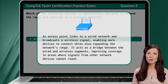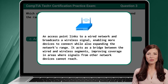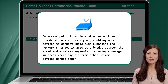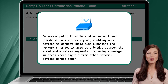An access point links to a wired network and broadcasts a wireless signal, enabling more devices to connect while also expanding the network's range. It acts as a bridge between the wired and wireless segments, improving coverage in areas where signals from other network devices cannot reach.